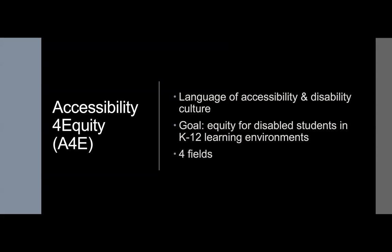This name emphasizes three key characteristics of the framework. First, the term accessibility is used to connect the framework to the language of accessibility and the disability cultures that developed that language. Second, the phrase for equity reveals the goal of the framework: equity for disabled students in K-12 learning environments. Third, the use of the numeral 4 symbolizes the integration of constructs of access from four fields.